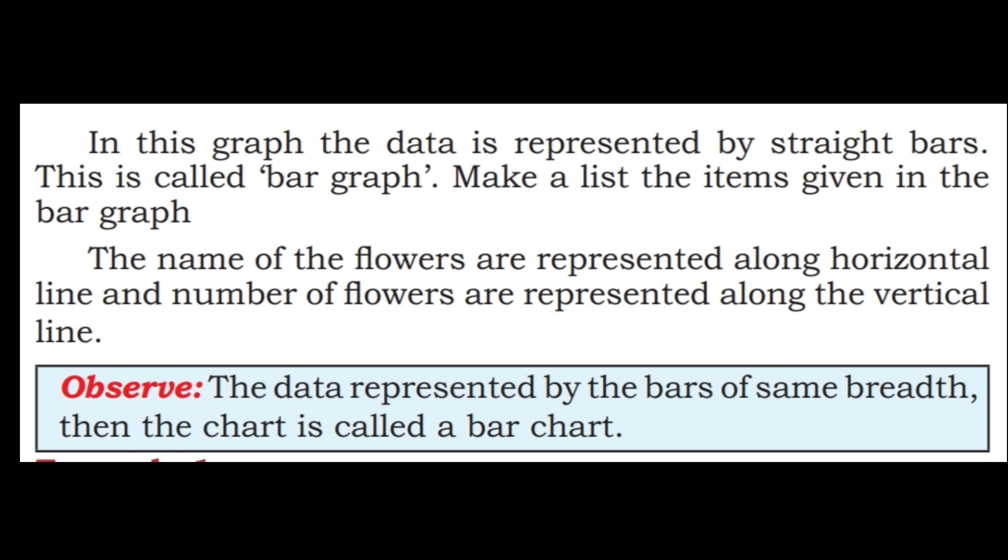In this graph, the data is represented by straight bars. This is called bar graph. Make a list of the items given in the bar graph. The name of the flowers are represented along horizontal line and the number of flowers are represented along the vertical line. Observe. The data are represented by the bars of same breadth. Then the chart is called a bar chart.